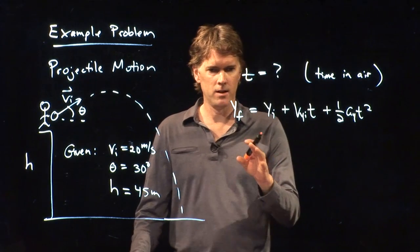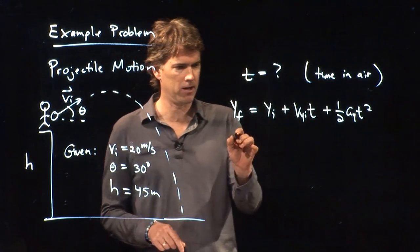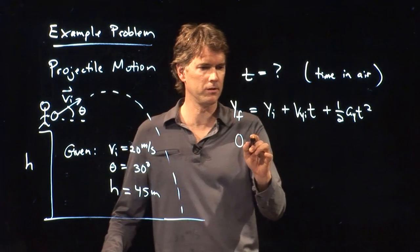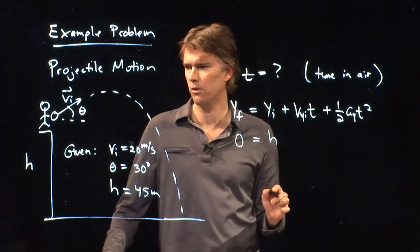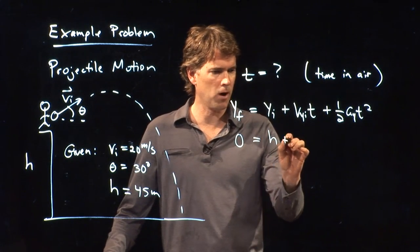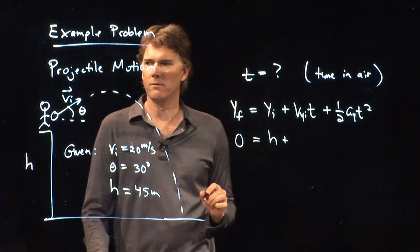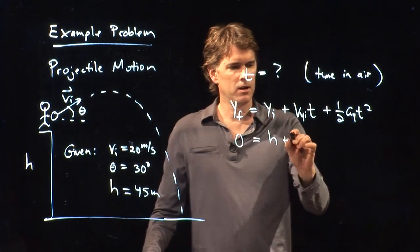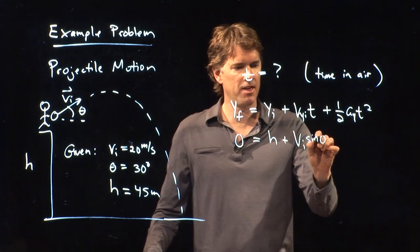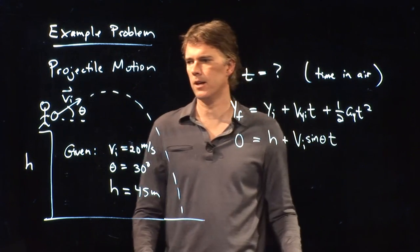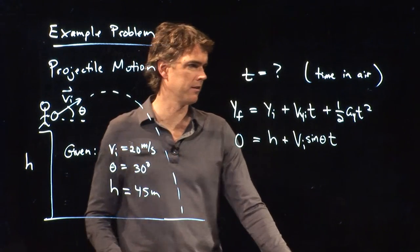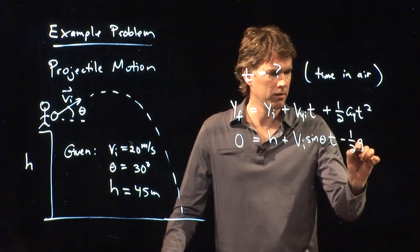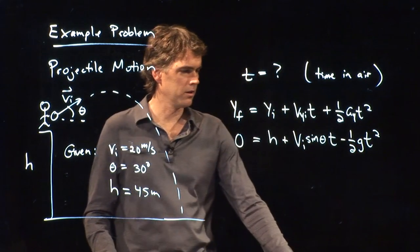And we know a lot of this stuff, right? What's Y final when it hits the ground? Well, that's zero. We can make Y equal zero wherever we want, but ground level's a natural choice. Y initial is where we started from, height H. VY initial is what? Well, we want the vertical component of the velocity, which means VI sine theta. That's the vertical component of our initial velocity. And then we know that AY is negative G. And so look at this equation.